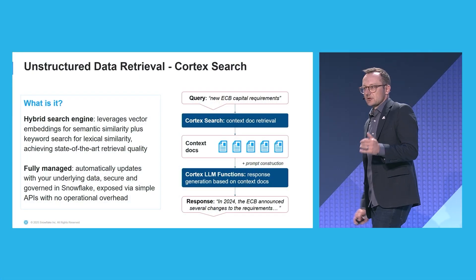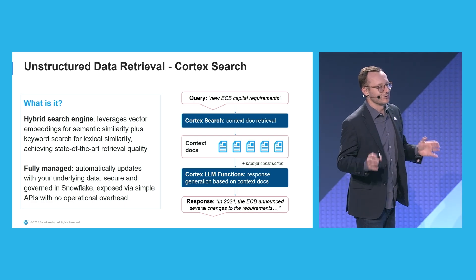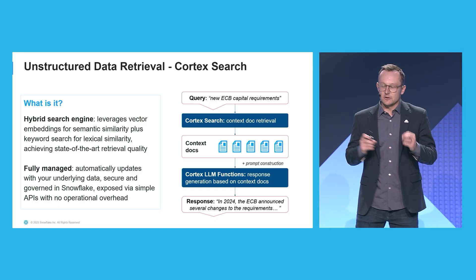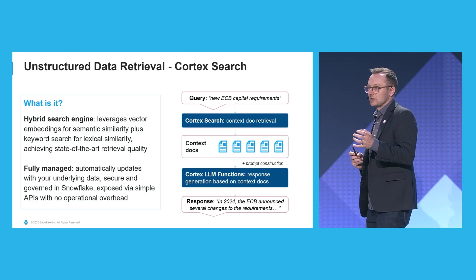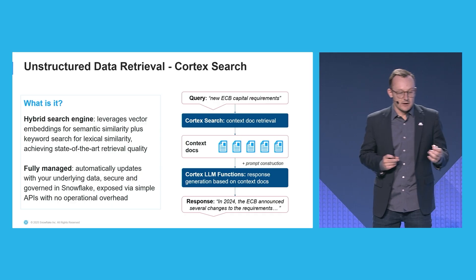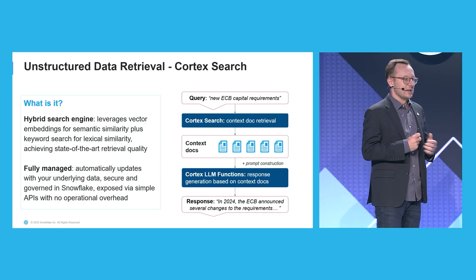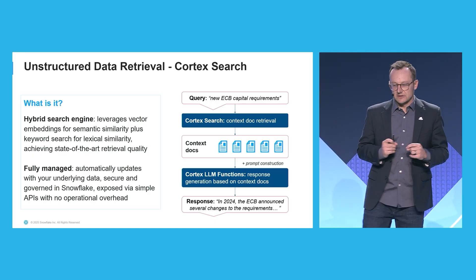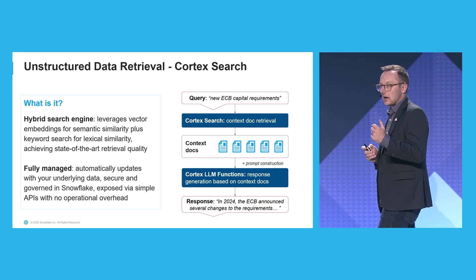For unstructured data retrieval, this is where we introduced Cortex Search about 12 months ago. It is a hybrid search engine that leverages vector embeddings for semantic similarity as well as lexical search, giving you hybrid retrieval and state-of-the-art quality retrieval tools. It is now increasingly highly customizable and fully managed, so we can automatically process updates on your unstructured data as it's being loaded into Snowflake.